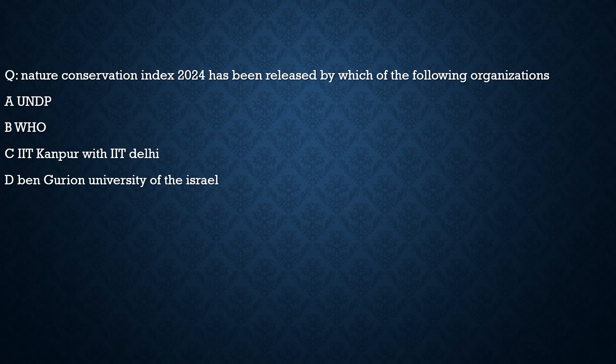The next question asks: The Nature Conservation Index 2024 has been released by which of the following organizations? UNDP — No. WHO — No. IIT Kanpur with IIT Delhi — No. Ben-Gurion University of Israel — 100% correct. The correct answer is option D.